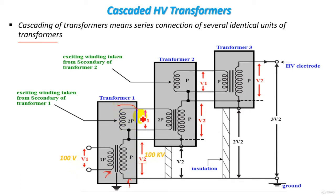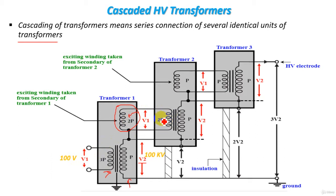But what is this winding? This winding is called an exciting winding, taken from the secondary of transformer 1. The number of turns of this exciting winding is the same as the number of turns of the primary winding. So the voltage applied to this exciting winding is the same as the primary winding voltage — V1, which is 100 volt. This voltage is transferred to the primary winding of transformer 2, which therefore also has voltage V1 of 100 volt. So the secondary winding of transformer 2 is of course 100 kilovolt.